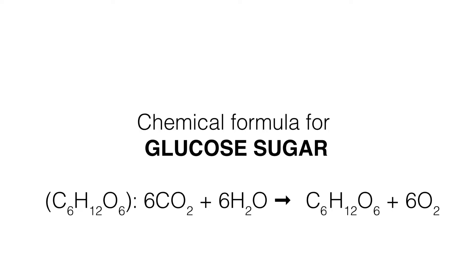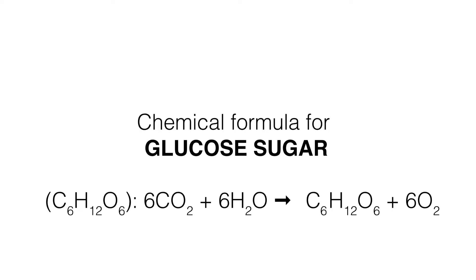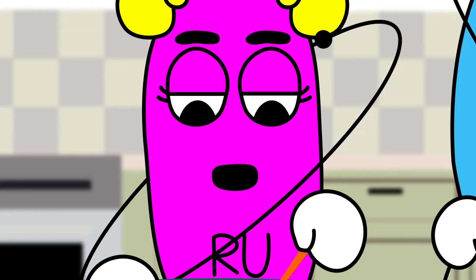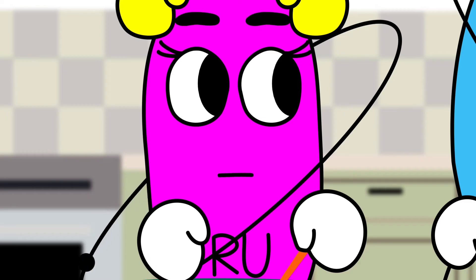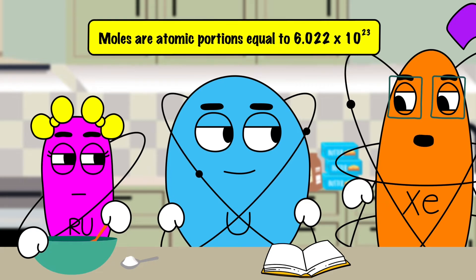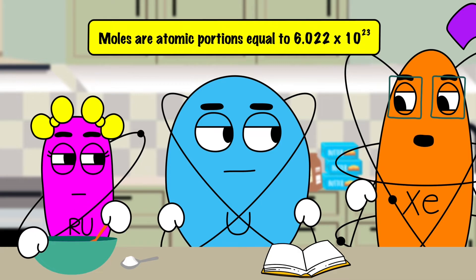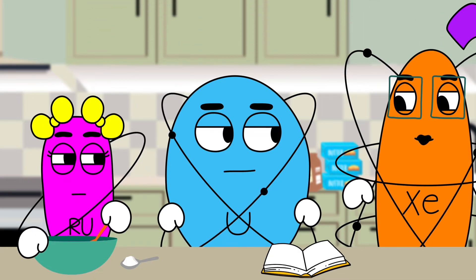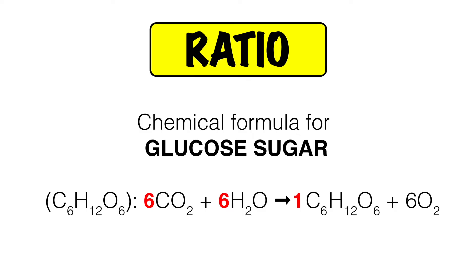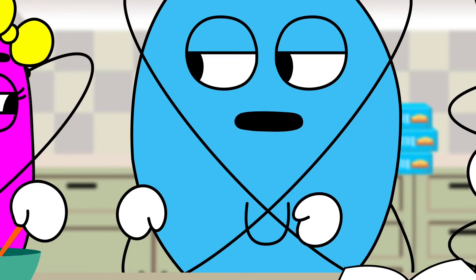Here we are. It looks like all we need are six moles of carbon dioxide, or CO2. Moles? Like those things growing on great-grandma's face? No. In chemical formulas, moles are atomic portions equal to 6.022 times 10 to the 23rd power, particles of a substance. We'll mix a ratio of six moles of carbon dioxide with six moles of water, and that will yield one mole of sugar with some oxygen left over. We don't need any oxygen in these cookies. Well, they do need to bake in the presence of oxygen.